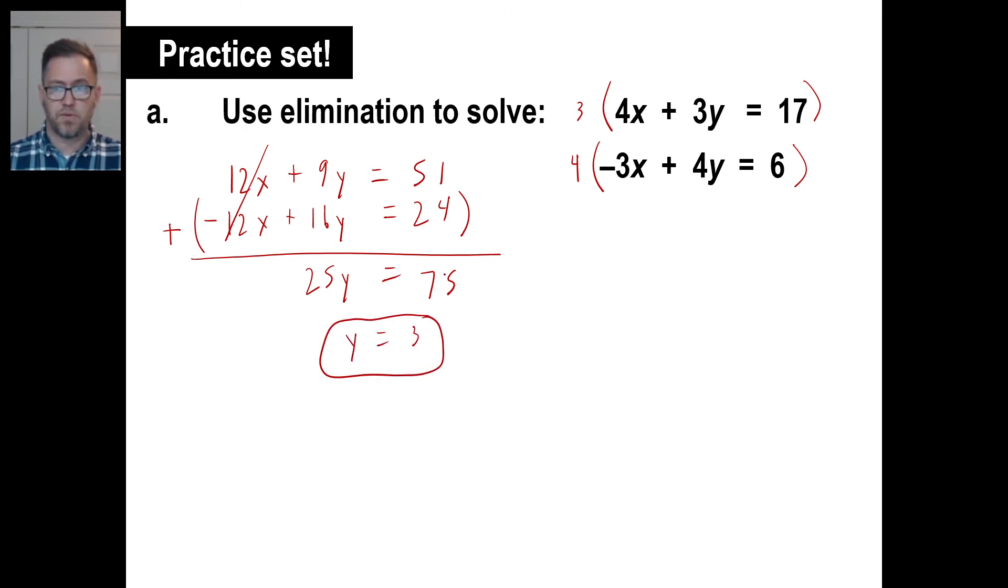Once you get y is 3, go back and do any, either one of these equations. I'd use the top one. Looks easier to me. Let's take this one and move it on down. Well, 4x is going to be 4x. 3 times y. If y is 3, then 3 times y is 9. And that'll be 17. So 4x is going to be 17 minus 9, which makes it x is going to be 2. Zoink. There you go. Okay. That's all there is to it. All right. I will see you guys next time. Have a great day.